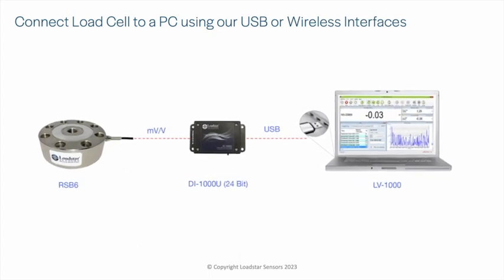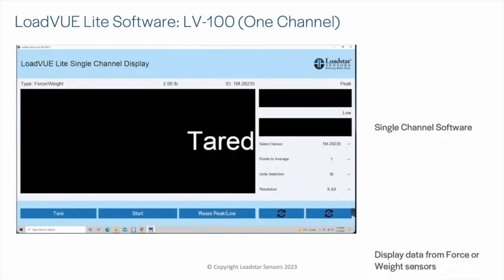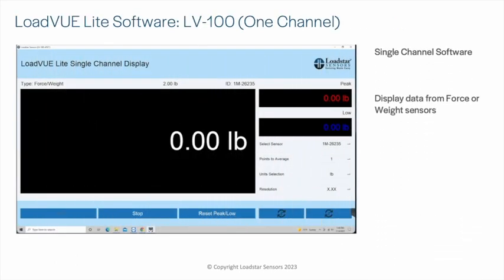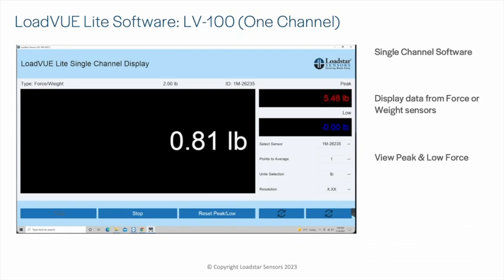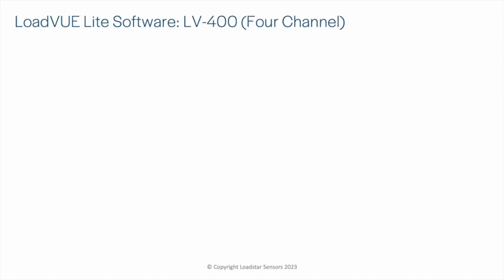Easily connect your load cells to a PC to display values using our USB or wireless interfaces. LoadView Lite software lets you display force or weight from a single connected USB load cell or interface. It also shows peak and low values for the session. You can change units, number of points to average, as well as display resolution.